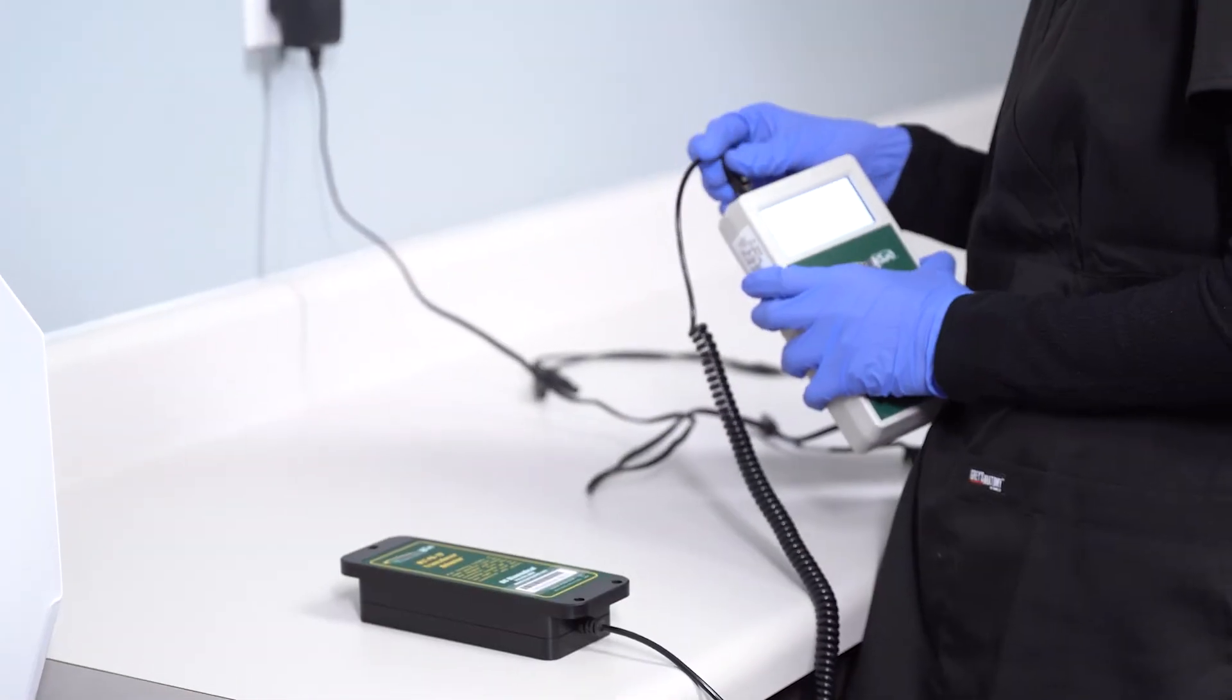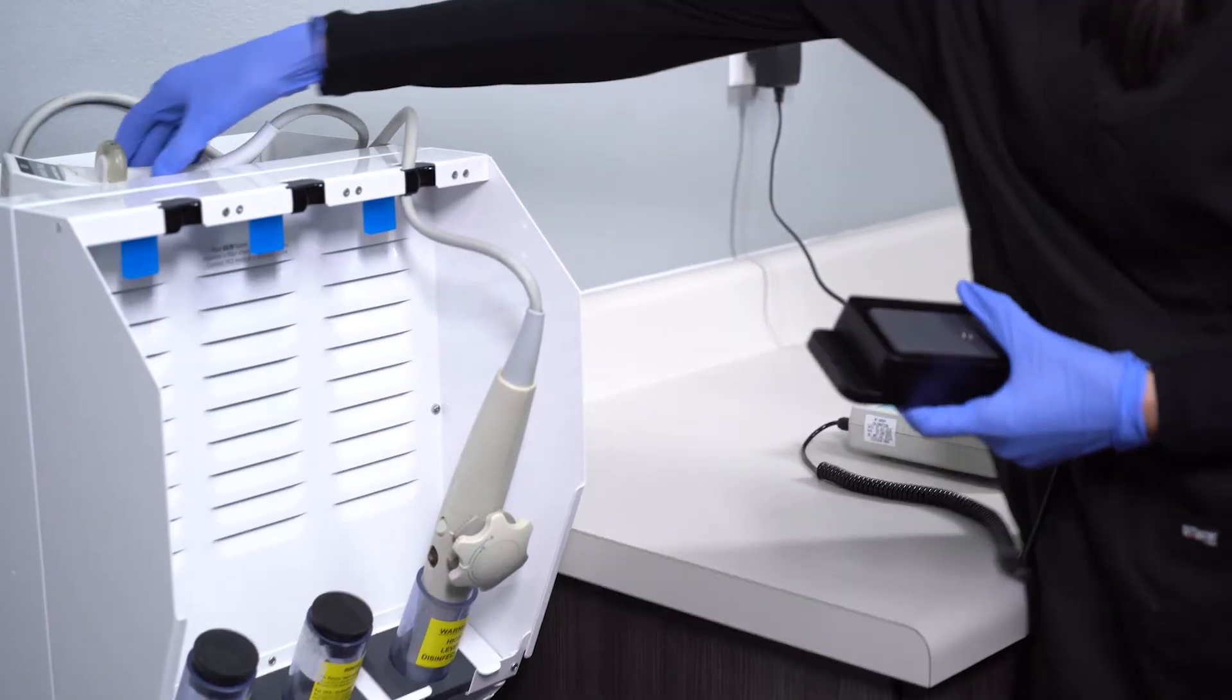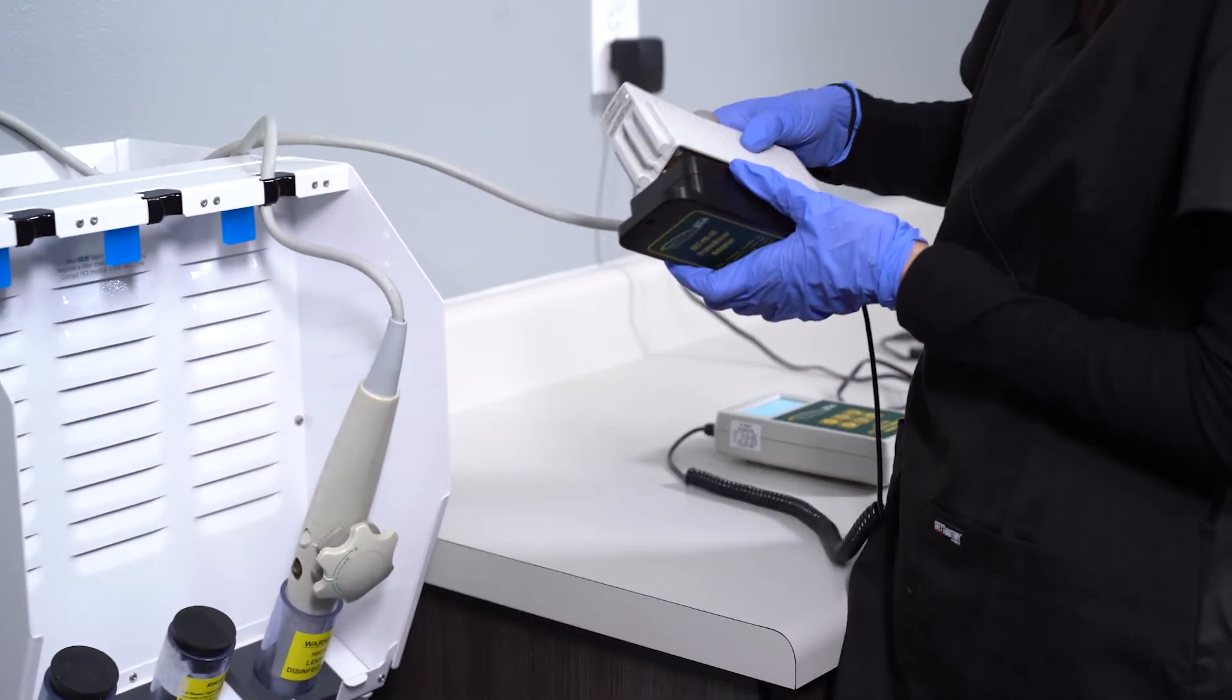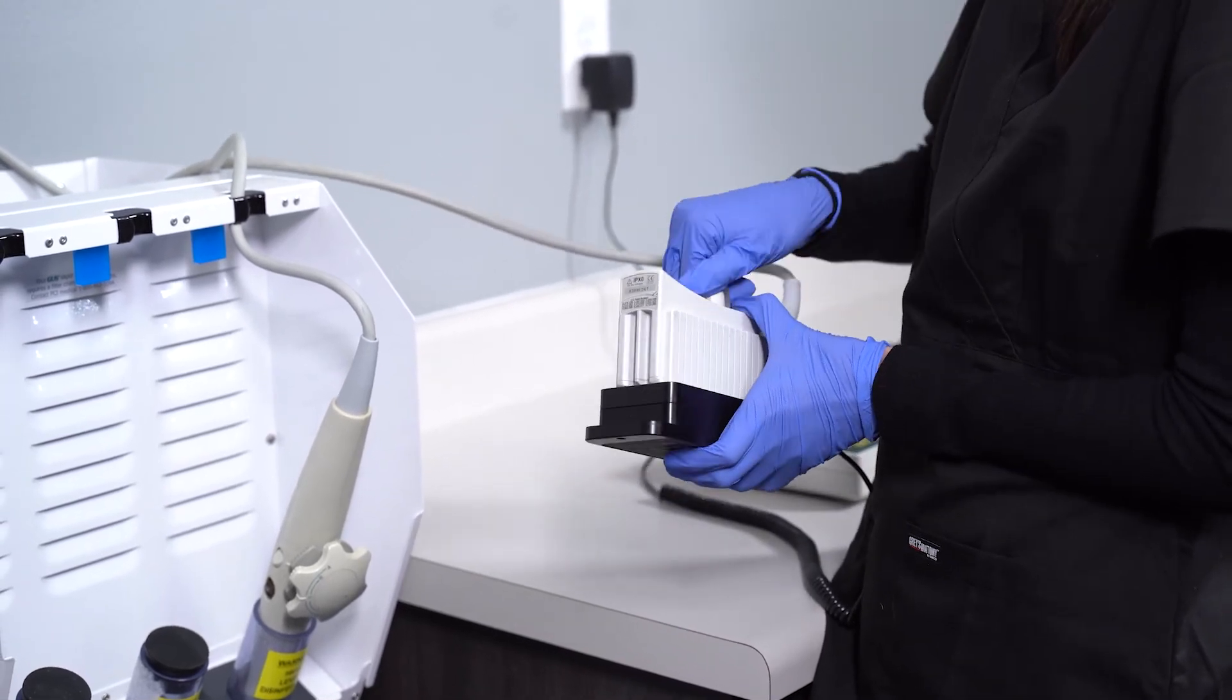First, attach the TEE probe adapter to the leakage tester. Then, connect the probe's electrical connector to the matching leakage tester adapter and lock in place.